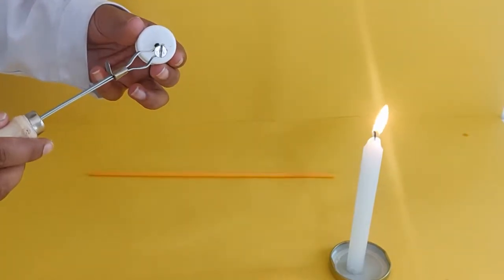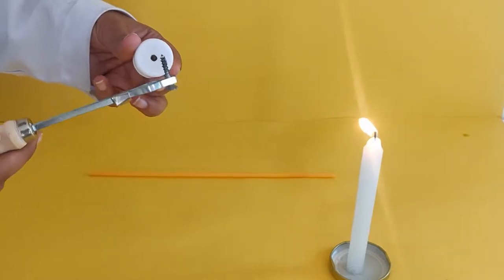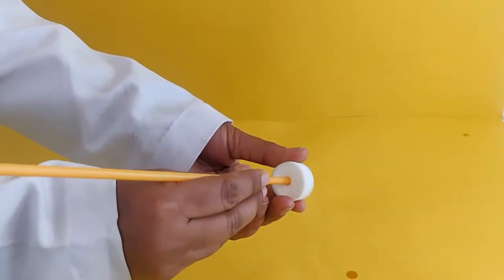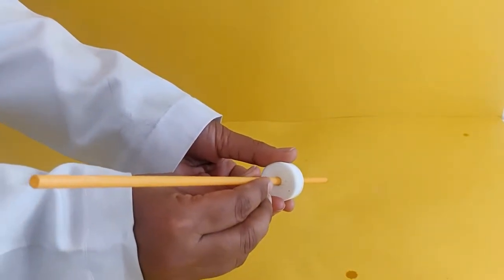Make a hole in the lid of the bottle using a heated nail and scissors. Insert the stiff straw through the hole.